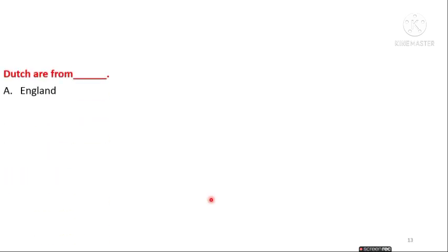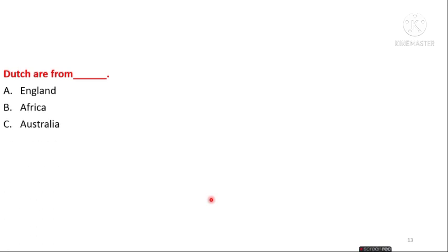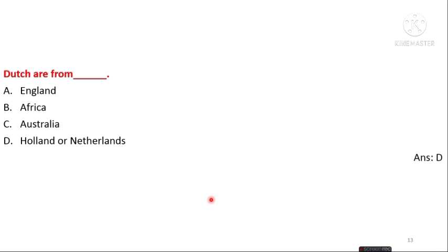The next question is: Dutch are from which country — England, Africa, Australia, or Holland/Netherlands? The answer is option D — the Dutch are from Holland or Netherlands.